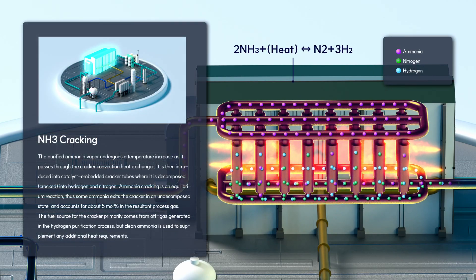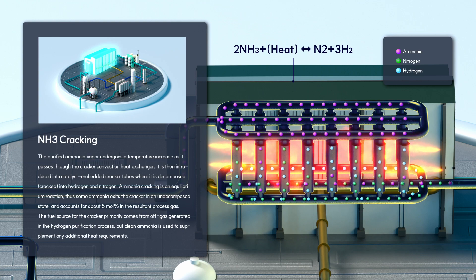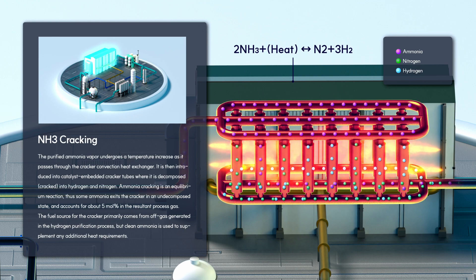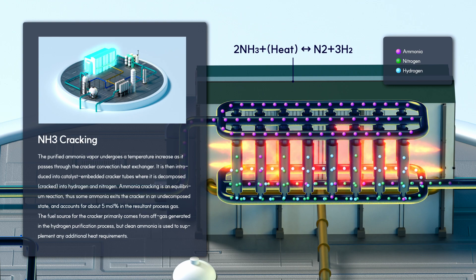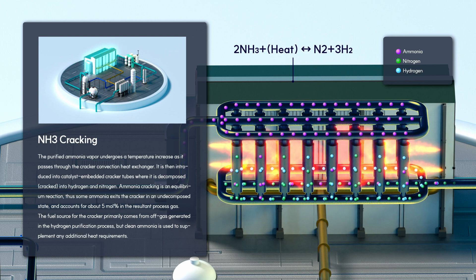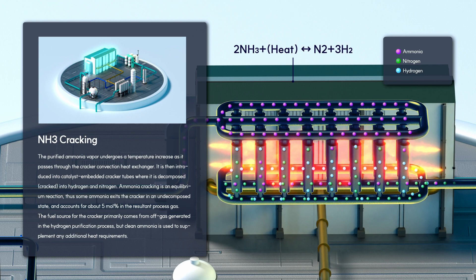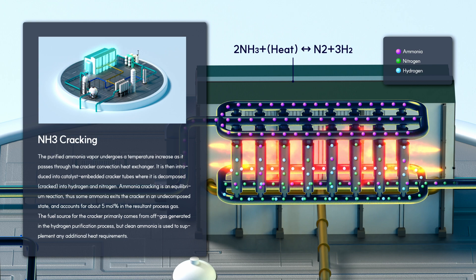The purified ammonia vapor undergoes a temperature increase as it passes through the cracker convection heat exchanger. It is then introduced into catalyst-embedded cracker tubes, where it is decomposed into hydrogen and nitrogen. Ammonia cracking is an equilibrium reaction, thus some ammonia exits the cracker in an undecomposed state, accounting for about 5 mol percent in the resultant processed gas.